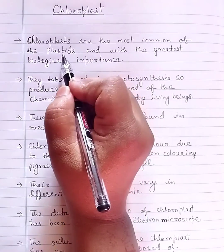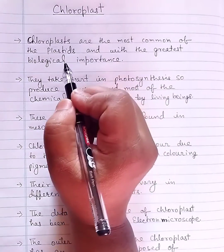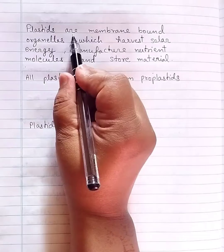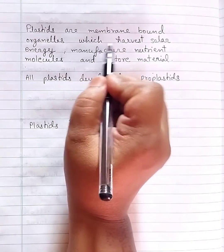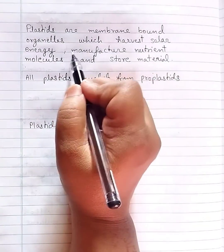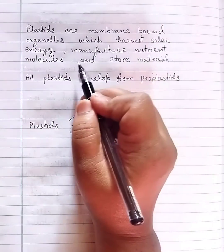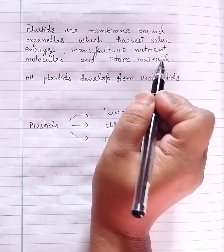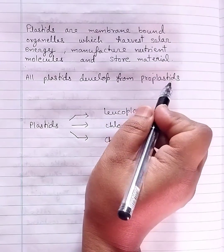First of all, what is plastid? Plastids are membrane-bound organelles which harvest solar energy, manufacture nutrient molecules, and store material.